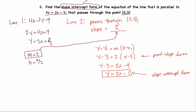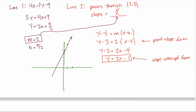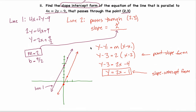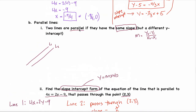Note that y equals 2x plus 9 halves and y equals 2x minus 1 are parallel because they have the exact same slope, but they're not the same line — different y-intercepts. Line 1 crosses the y-axis at about 4.5 and goes up 2 units for every 1 unit to the right. Line 2 crosses at negative 1 and has the same slope, so it goes up 2 for every 1 to the right. The key takeaway: two lines are parallel if and only if they have the same slope.